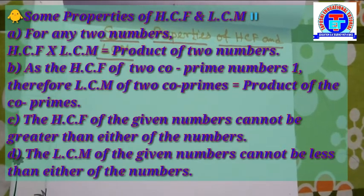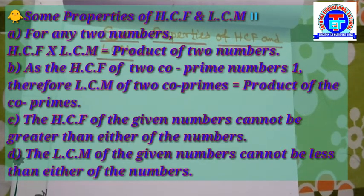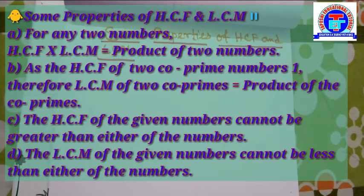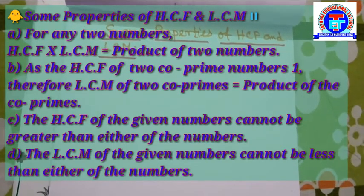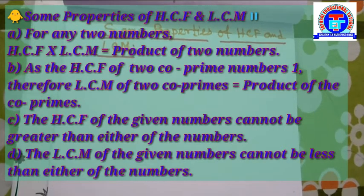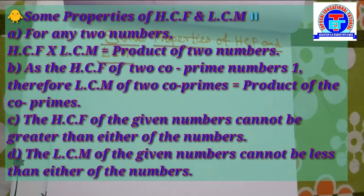Property C: the HCF of the given numbers cannot be greater than either of the numbers. Property D: the LCM of the given numbers cannot be less than either of the numbers. So, try to understand by the given example.